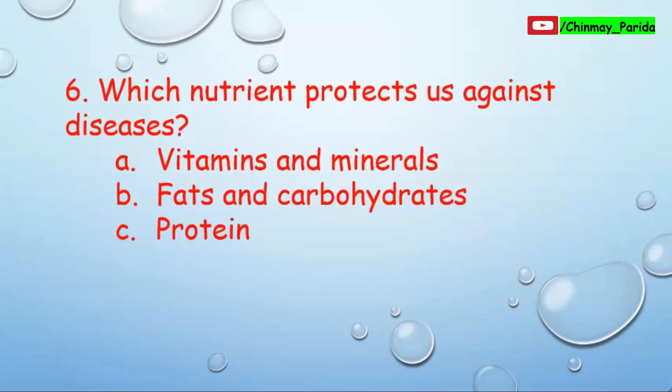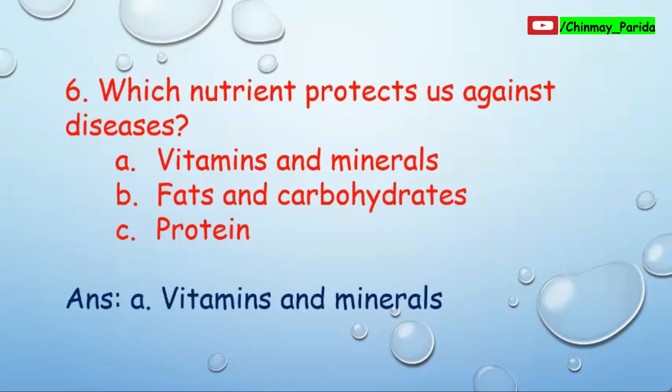Question number six: Which nutrient protects us against diseases? Which nutrient gives us immunity? Option A: Vitamins and minerals, Option B: Fats and carbohydrates, Option C: Protein. The correct answer is Option A — vitamins and minerals protect us against diseases.